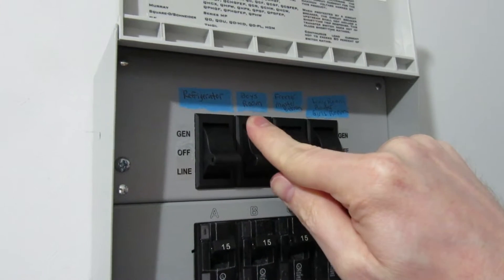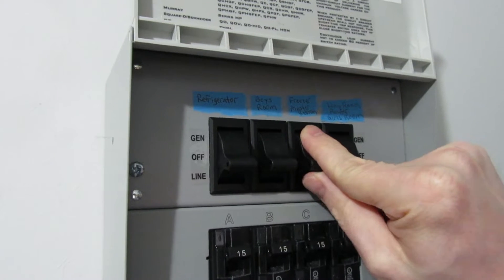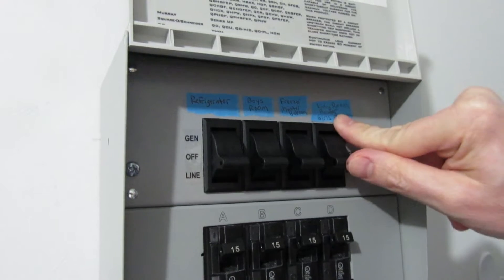Then we have the boys' room, and it also powers the bathroom. We have the freezer, master bedroom, and bathroom. And we also have a living room, girls' room, and the Wi-Fi router.